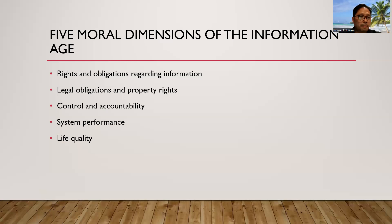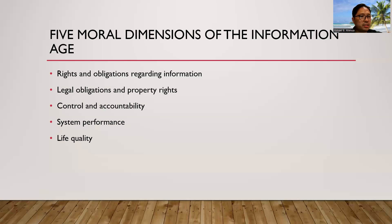Third is control and accountability. Who will be held responsible and accountable for the damage done to property rights and individual and collective information? Fourth is system quality and performance. What requirements for data and system quality should we make in order to safeguard people's rights in the security of society? For example, computer crime, spam, junk mail. Fifth is life quality. What principles ought to be upheld in a society? What values, information, and knowledge? Which institutions should we defend against abuse? Which cultural beliefs and customs do the new information technology support? For example, repetitive stress injury, computer vision syndrome — an eye strain condition related to computer display screen use — and technostress.